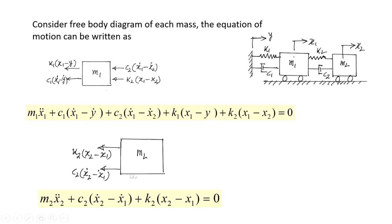For the second mass m2, the spring force acts only from the story below. So the spring force is k2(x2 minus x1) and damping force is c2(x2-dot minus x1-dot). Writing the equilibrium equation for mass m2: m2·x2-double-dot plus c2(x2-dot minus x1-dot) plus k2(x2 minus x1) = 0. We have thus found the two equations of motion.